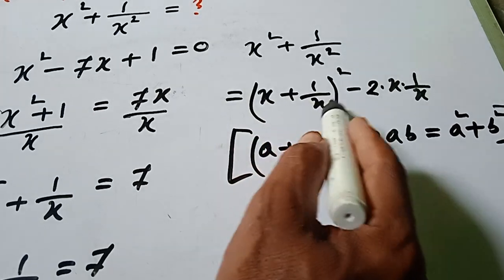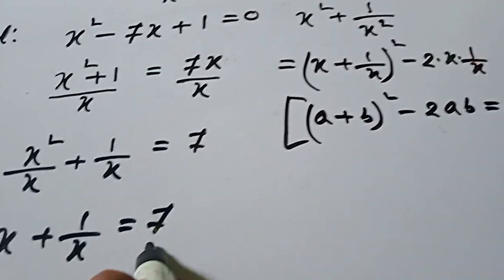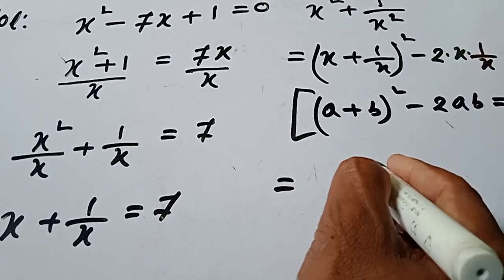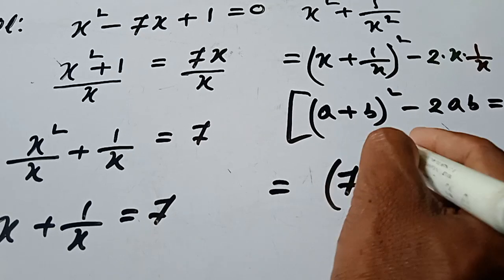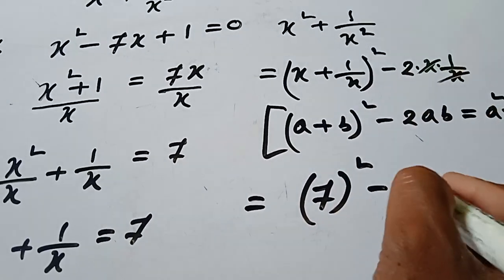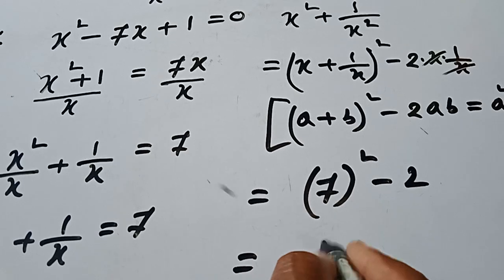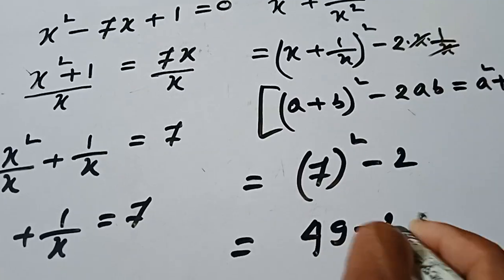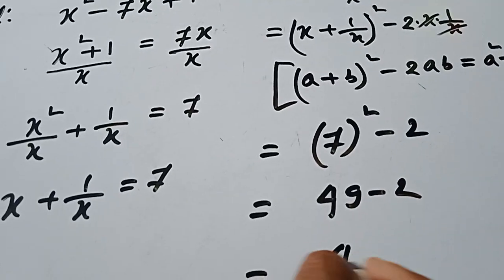So x plus 1 over x is equal to 7. Here 7 square minus, here x times x cancel, is equal to 2. 49 minus 2 is equal to 47.